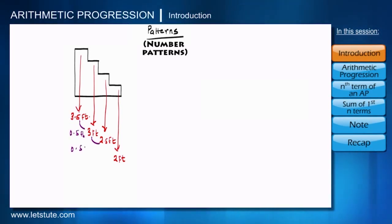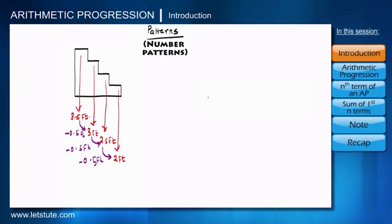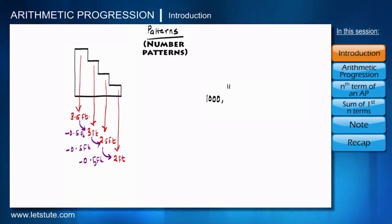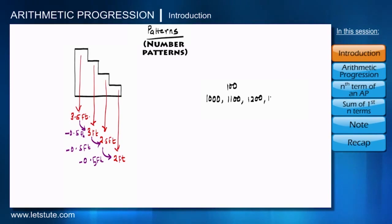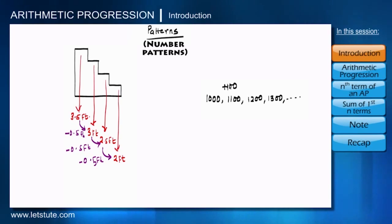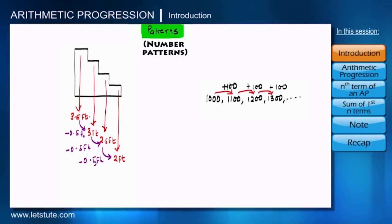Every next step is getting reduced by 0.5 feet. Here is another example: a man deposited 1000 rupees in a bank and it gives 100 rupees as interest at the end of the year. So at the end of the first year the accumulated amount will be 1100, at the end of the second year it will be 1200, then 1300, and so on — every time 100 rupees is added to the previous amount.